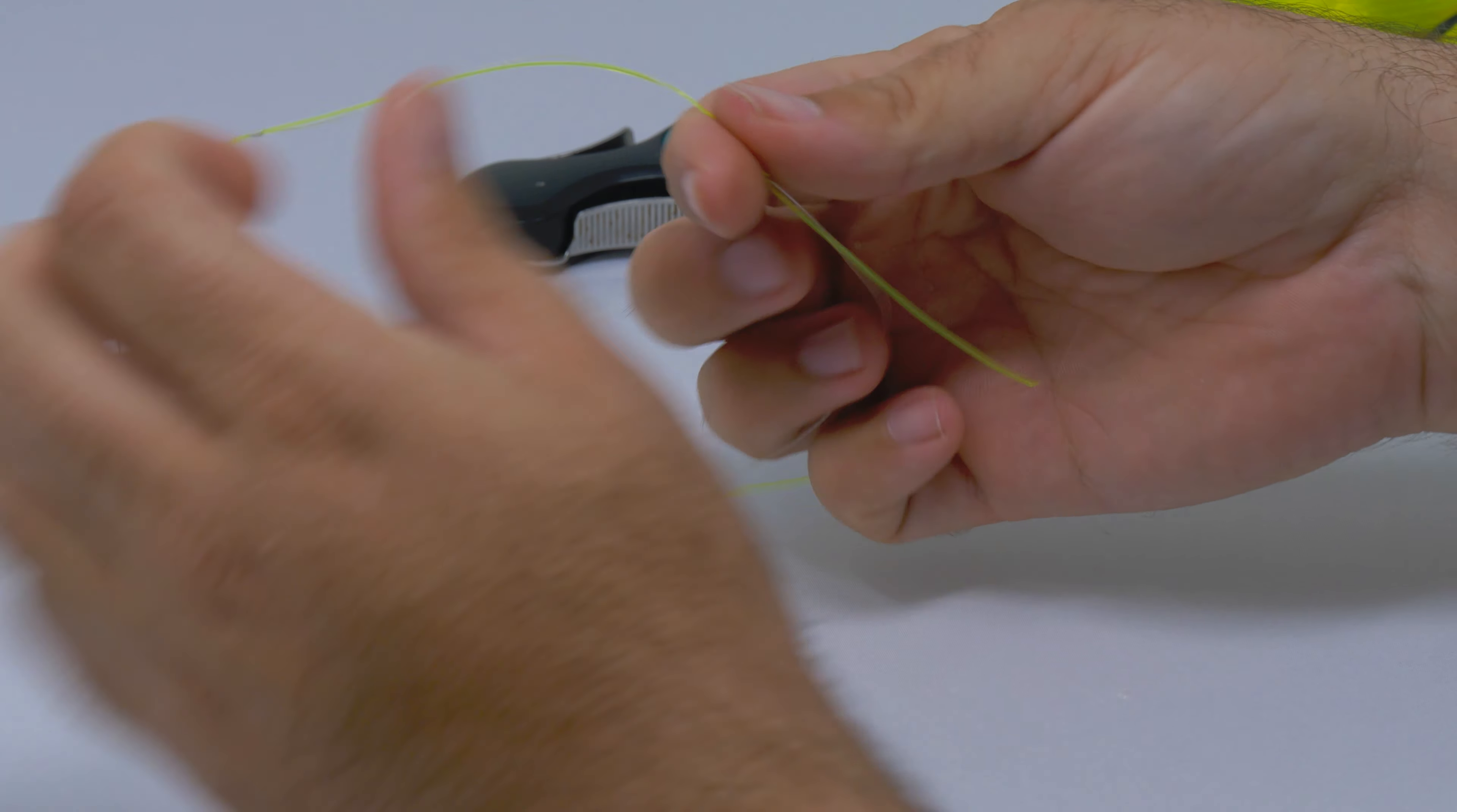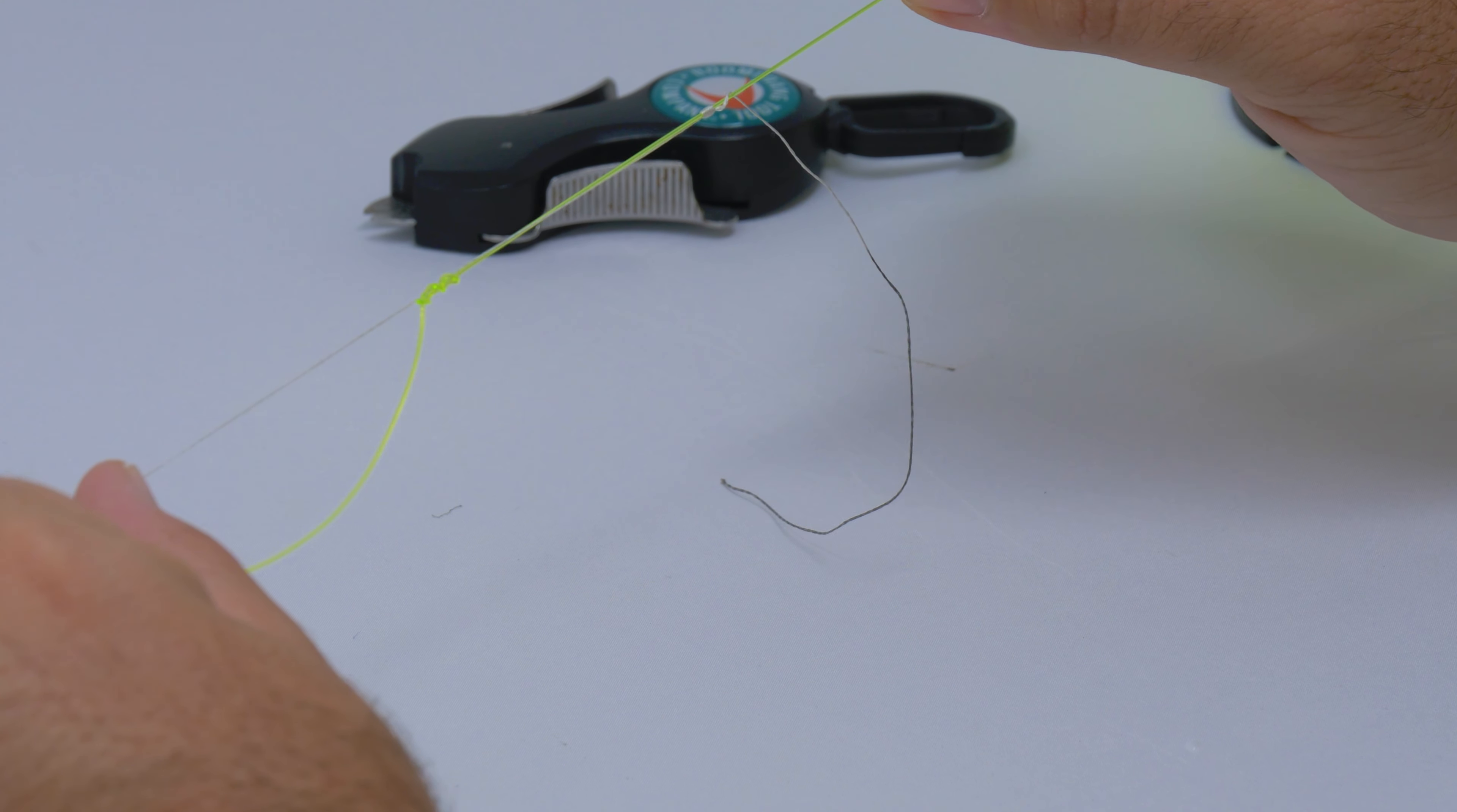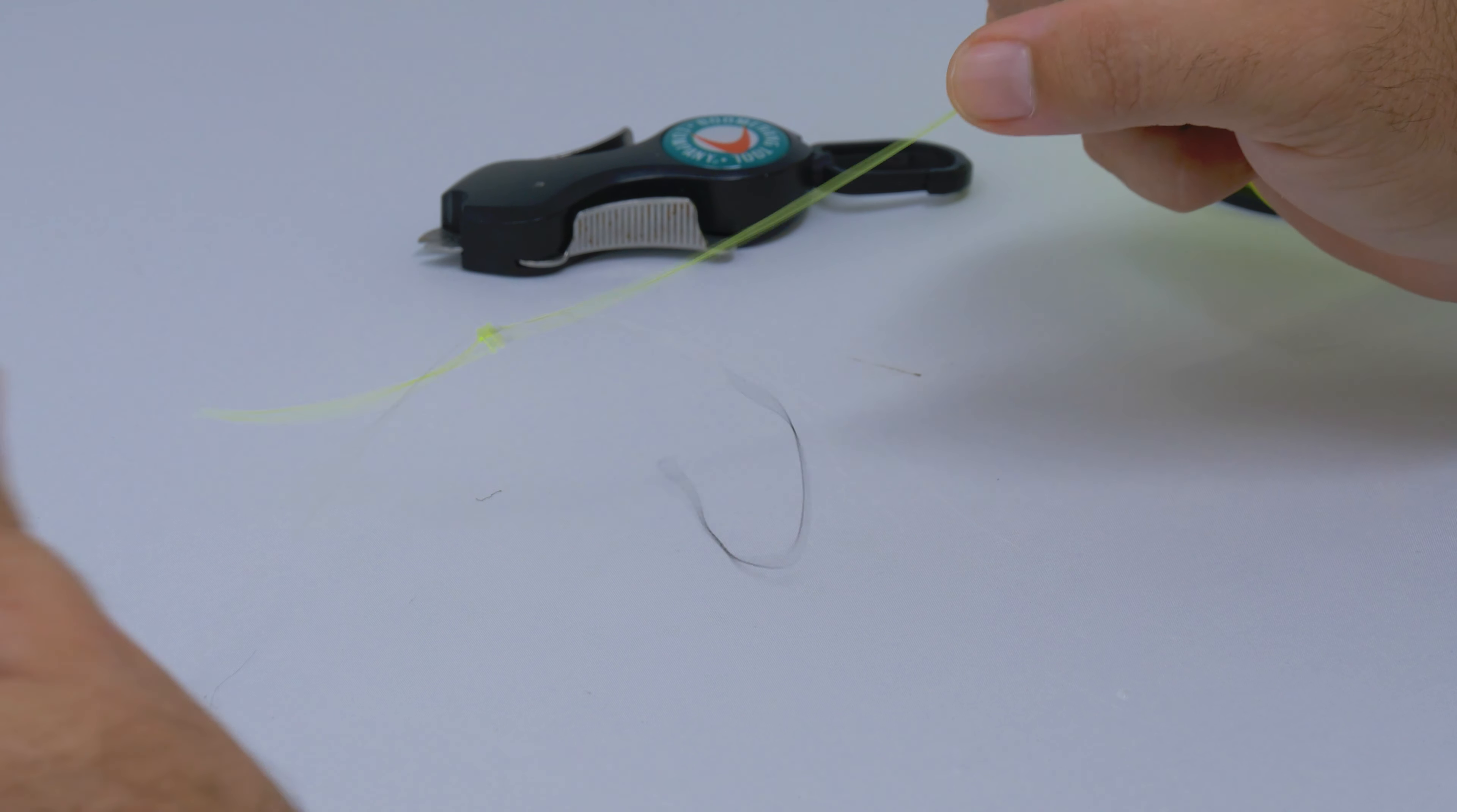Go ahead and pull it as tight as you can. Don't worry, it's going to tighten down on itself when you pull them together. As you can see, both the braid and the mono are coming together and watch how the knot pulls down on one another perfectly and it cinches down.